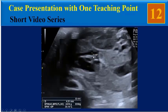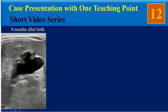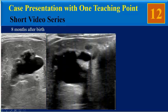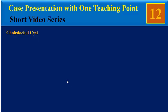We also found a small stone at the distal end of the CBD near the head of the pancreas. In postnatal ultrasound follow-up eight months after birth, we again found the saccular cystic structure. We also noted the normal gallbladder near the cystic structure, and revealed a distended common bile duct in front of the portal vein containing sludge material. These findings are suggestive of a choledochal cyst.